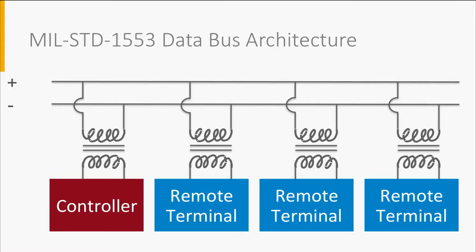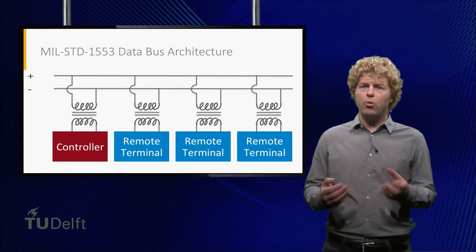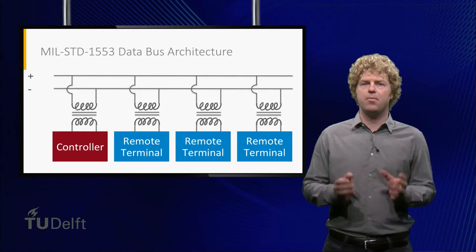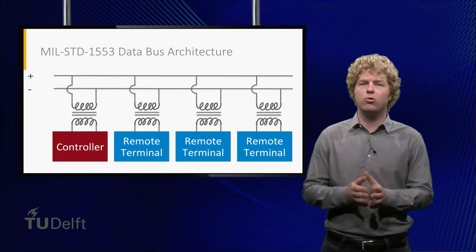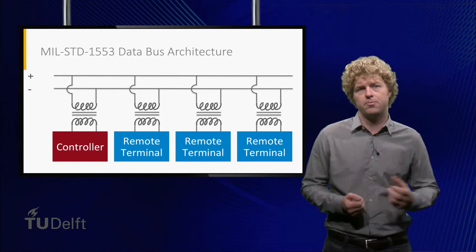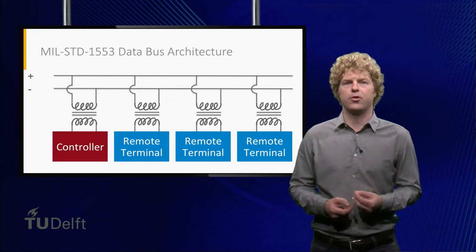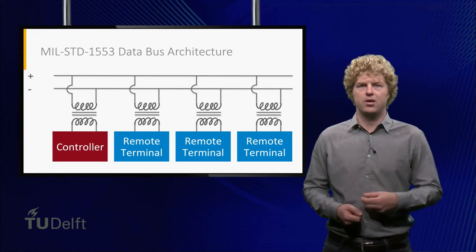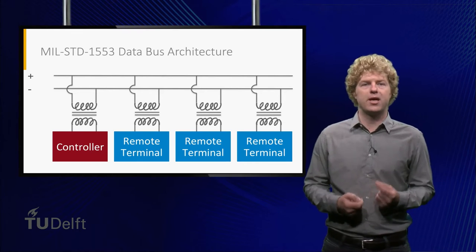It is also a serial bus, since all data is transmitted sequentially. All devices use coupling transformers to connect physically to the bus. In this figure you see a simplified version with only a single transformer. In practice there could be several passive elements, depending on the distance between the tapping point and the remote terminal. The important aspect of the transformer coupling is that the main bus is protected against short circuits which can occur at the subsystems. This improves the overall reliability of the bus. The data rate of the MILBUS goes up to 1 megabit per second.